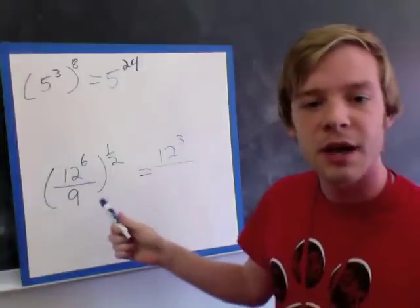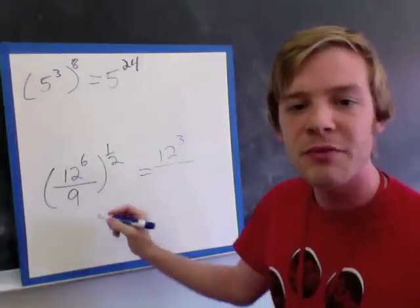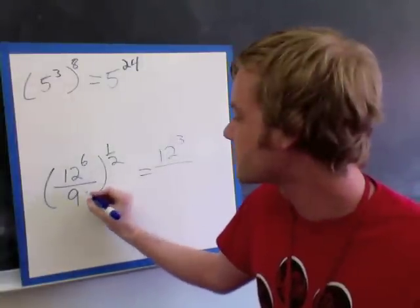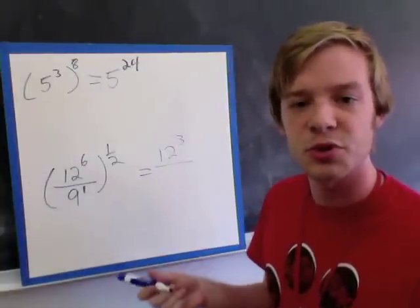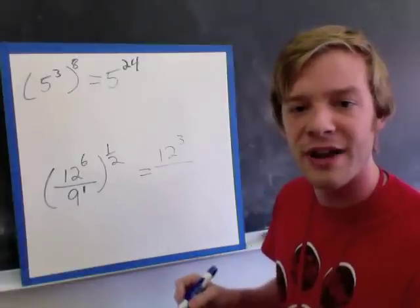Now on bottom, I don't have a power here, so we remember this counts as a power of 1. So 1 times by 1 half is still just 1 half, so I'm going to have 9 to the power of 1 half on bottom.